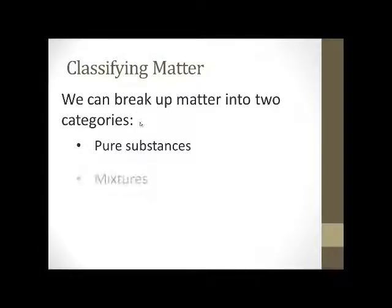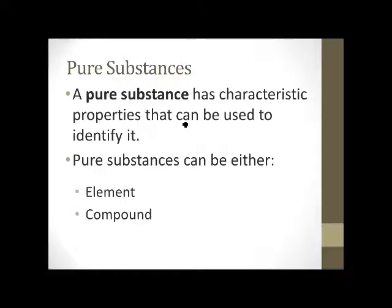One is pure substances, and the other one is mixtures. A pure substance has characteristic properties that can be used to identify it, meaning that the melting point or the boiling point, you could use color, density, any one of these will identify every single part of that pure substance. Different parts aren't going to be different.